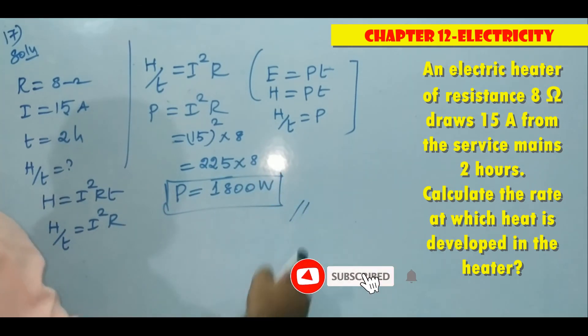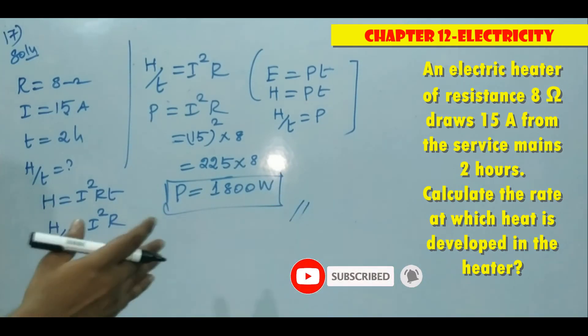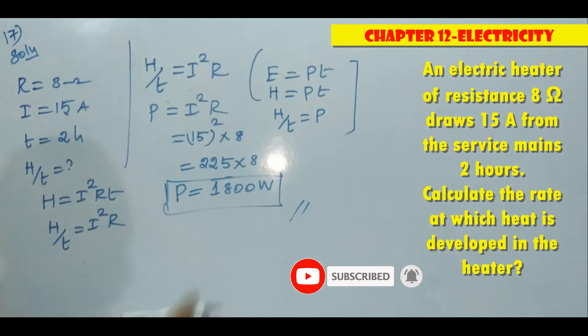That is the answer for this question. So heat produced. The rate of heat produced is 1800 watt.